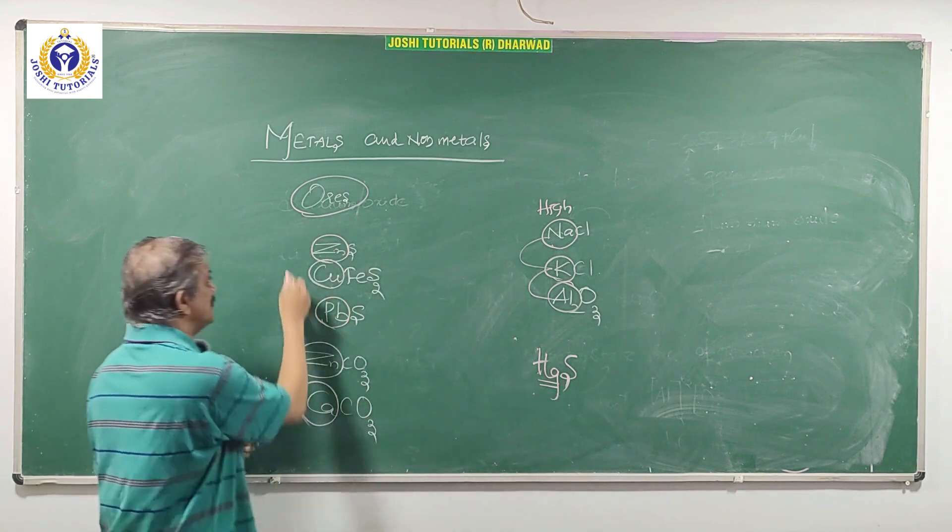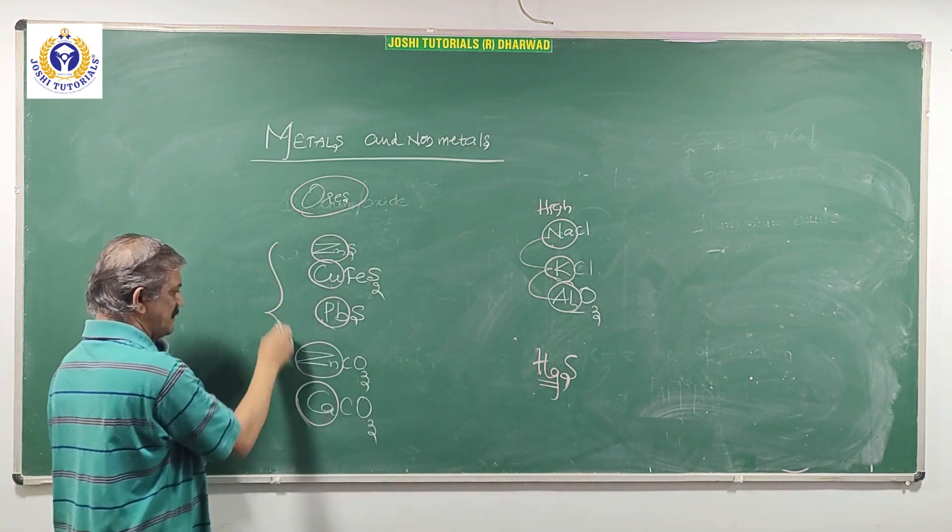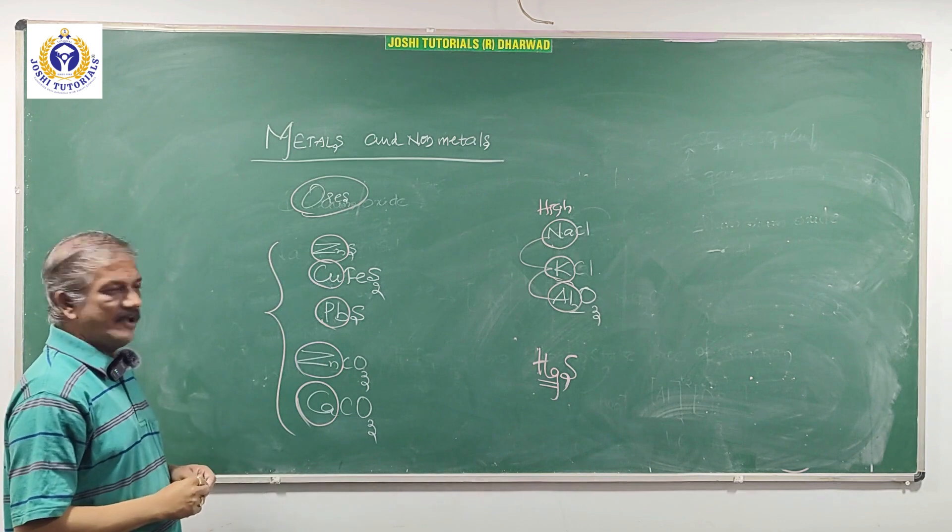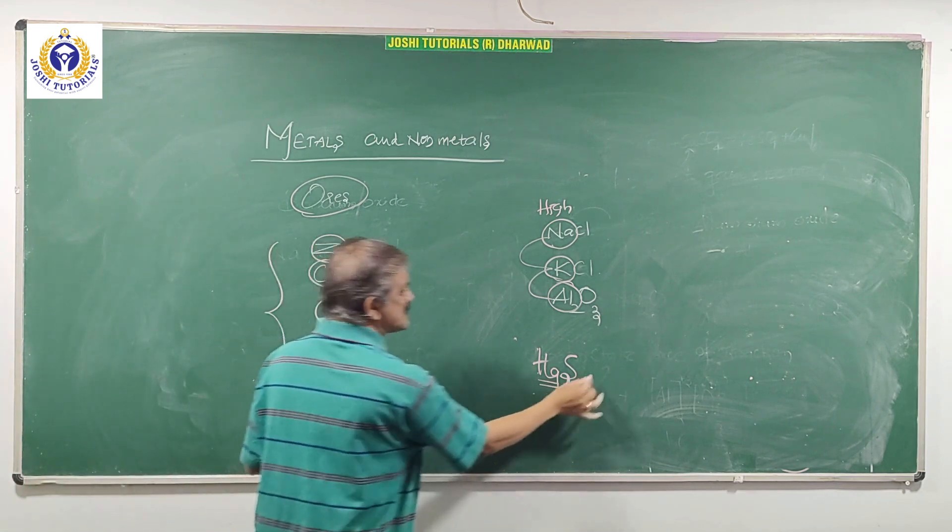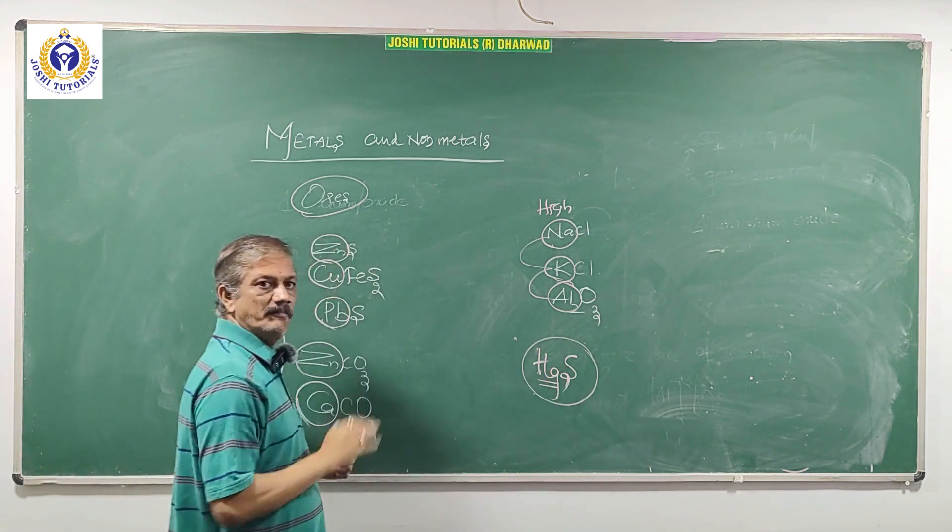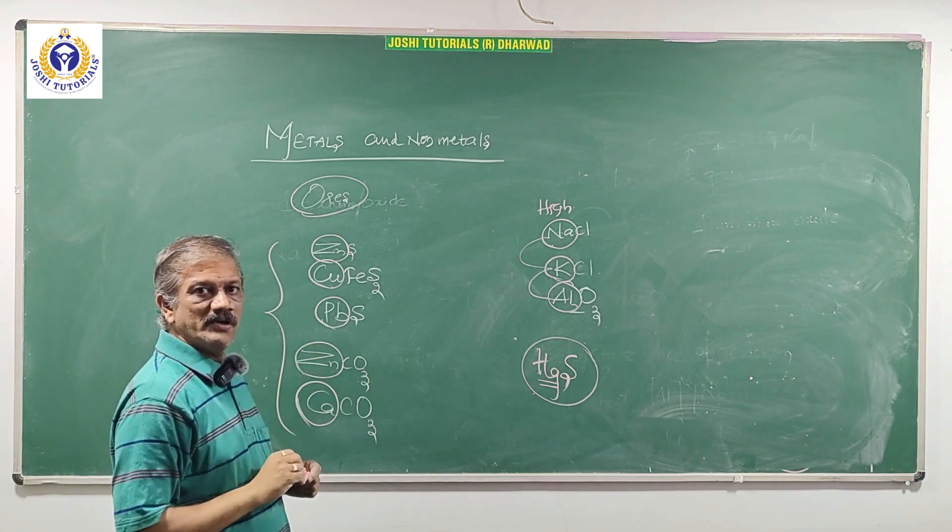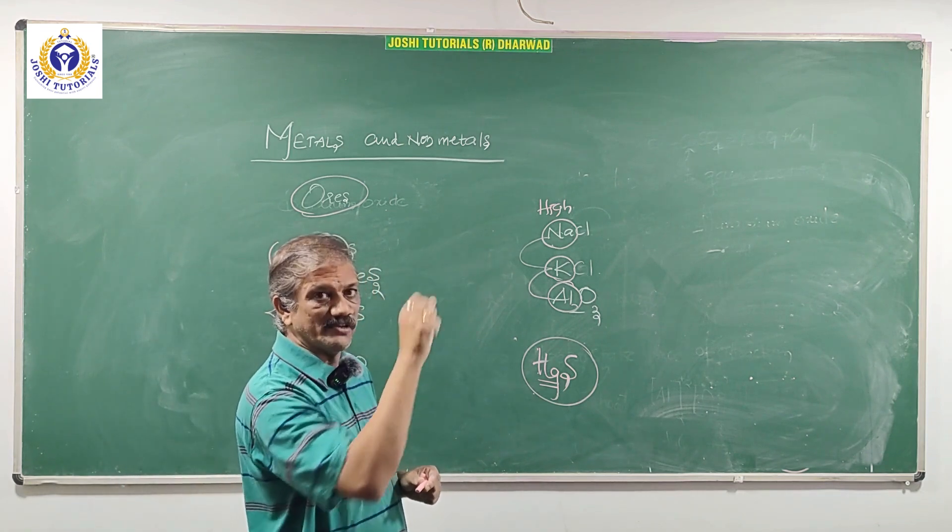Middle reactivity, middle reactivity. It is low reactivity example. Mercury comes under low, near to after HG, I mean hydrogen.